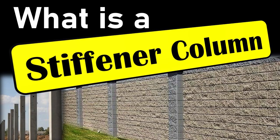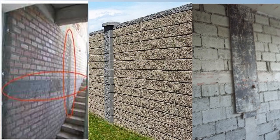What is a stiffener column? A stiffener column is a structural element used in construction and engineering to enhance the strength and rigidity of a structure. It is typically employed in areas where additional support is needed to resist bending, buckling, or deformation. Mostly, stiffener columns are constructed when building boundary walls using bricks or blocks, and are used to stiffen those block or brick walls.